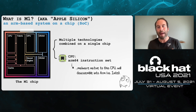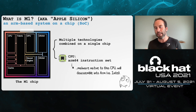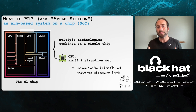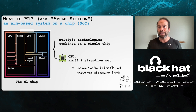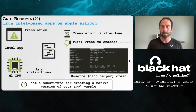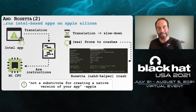So what is M1, or Apple Silicon? It's an ARM-based system on a chip, or SoC. The system on a chip combines multiple technologies on a single chip — in the M1, that's CPU, GPU, and various memories, all on one chip. In the context of malware analysis, the most important thing to know is that the CPU supports an ARM-based instruction set, specifically ARM64, which means any malware compiled to run natively on this system is going to disassemble into these instructions.